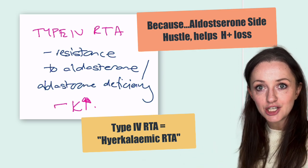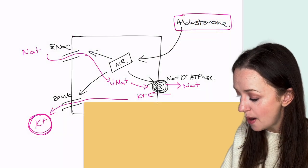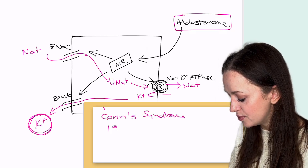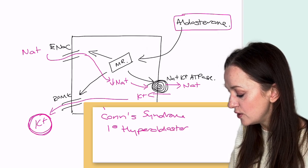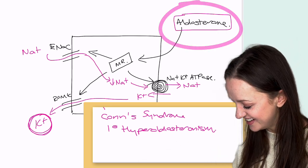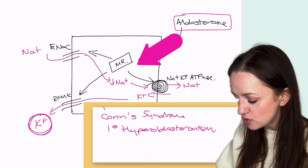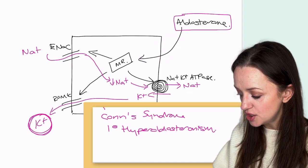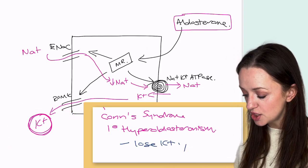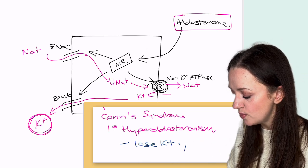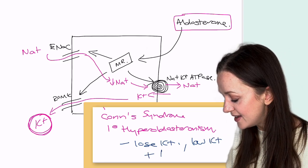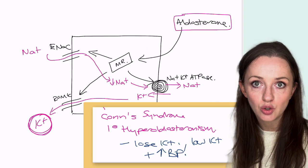The last place this could come up is Conn's syndrome, or primary hyperaldosteronism. That's when you've got an adrenal gland tumor that's just churning out aldosterone. So we've got more aldosterone stimulating this whole rig — we're going to lose potassium. Conn's syndrome is associated with low potassium — sometimes, not always — and high blood pressure because of all that salt and water reabsorption.